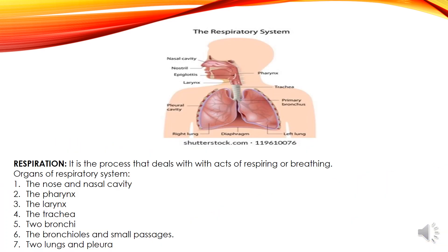Respiratory system: respiration is a process that deals with the act of respiring and breathing. Organs of the respiratory system are nose and nasal cavity, pharynx, larynx, trachea, bronchi, bronchioles, small fissures, two lungs and pleura. You can see the structure here, and structure is very important — whenever you don't have time in examination to attempt a question, just draw the structure nicely and you will get marks for that.